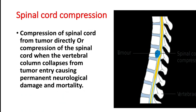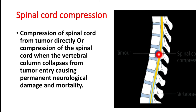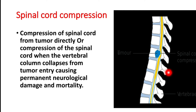Next is spinal cord compression. Because of any tumor, when the spinal cord is compressed, it can cause serious harm. Also, when the vertebral column collapses from tumor invasion — the spinal cord is protected by the vertebrae — if the vertebral column collapses because of a tumor invading the vertebra, it can cause permanent neurological damage resulting in mortality.